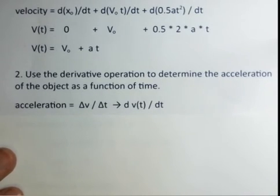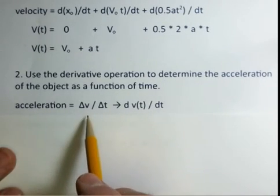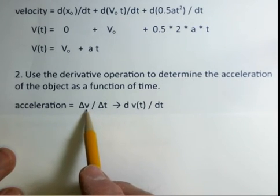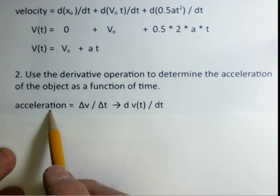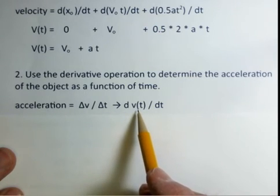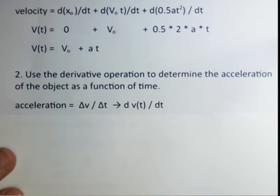We have the definition of average acceleration. It'll be delta v over delta t. How much did the velocity change in some finite time interval? We get the instantaneous acceleration by taking the derivative: the derivative of the velocity function with respect to time.